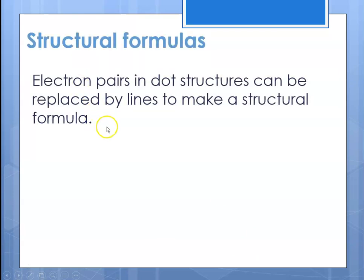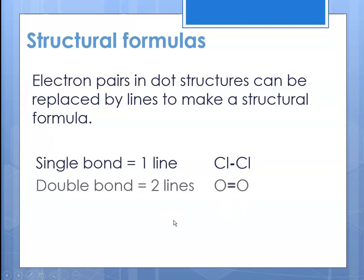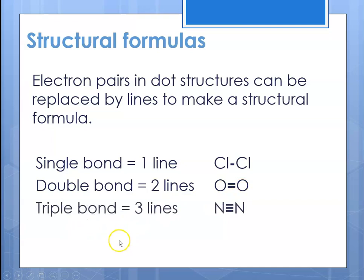Structural formulas show electron pairs using dot structures, but instead of putting all of the dots, you draw a line to show the structural formula. If there's a single bond, which is one line, like chlorine and chlorine, that line means one electron from each atom. If there's a double bond, you use two lines — that means two pairs of electrons shared. And if there are three pairs of electrons in a triple bond, we show three sets of lines — six electrons being shared.